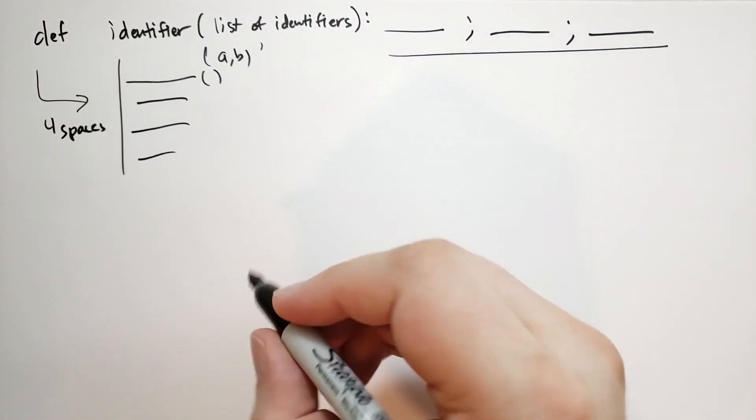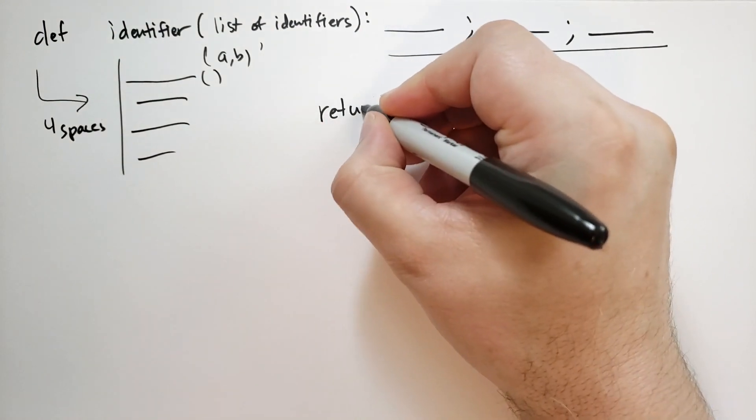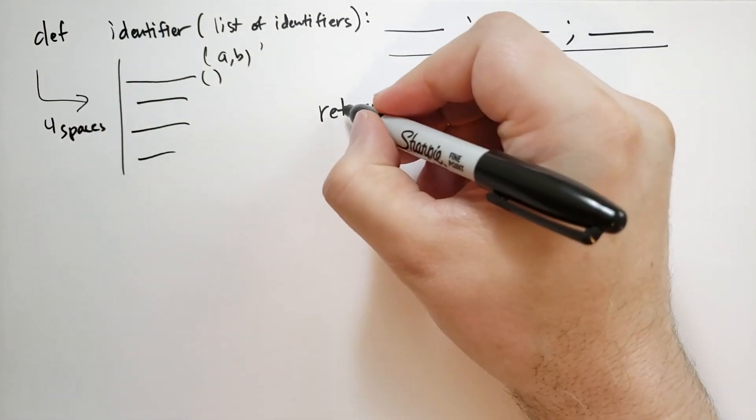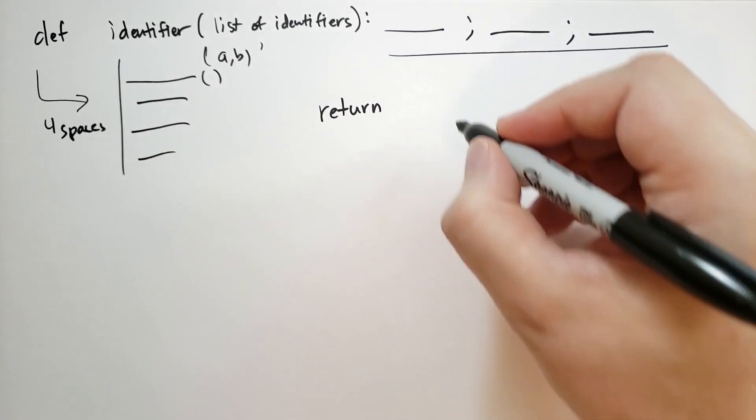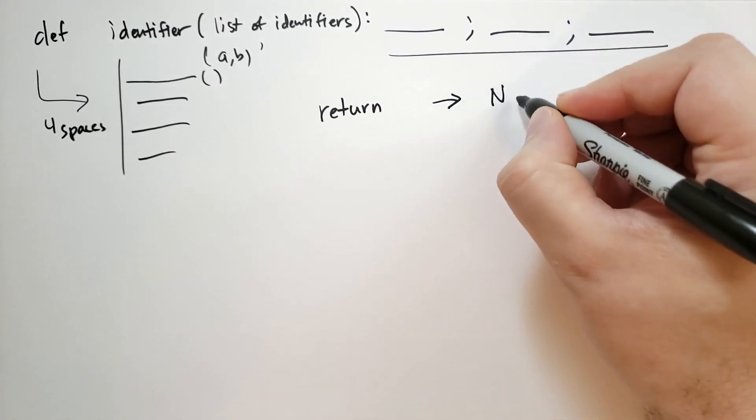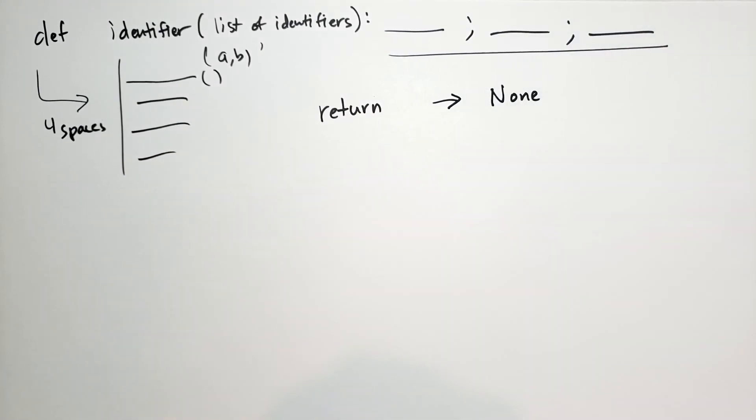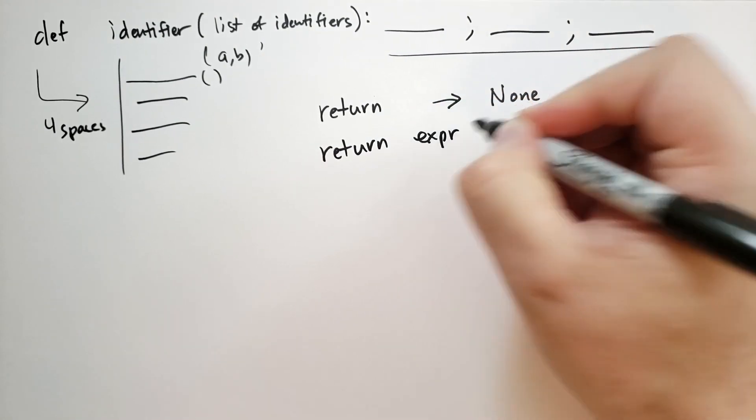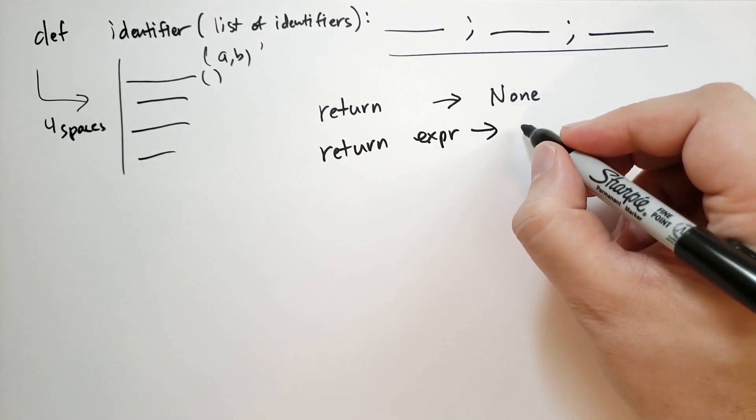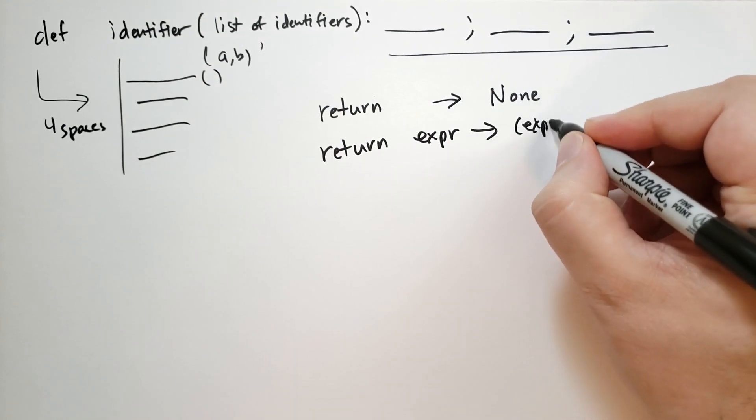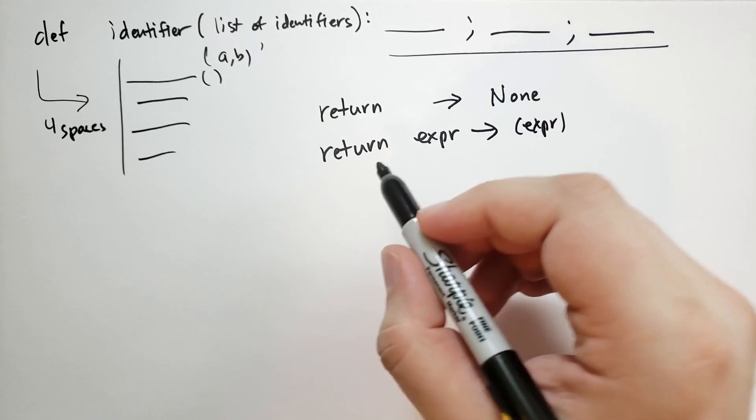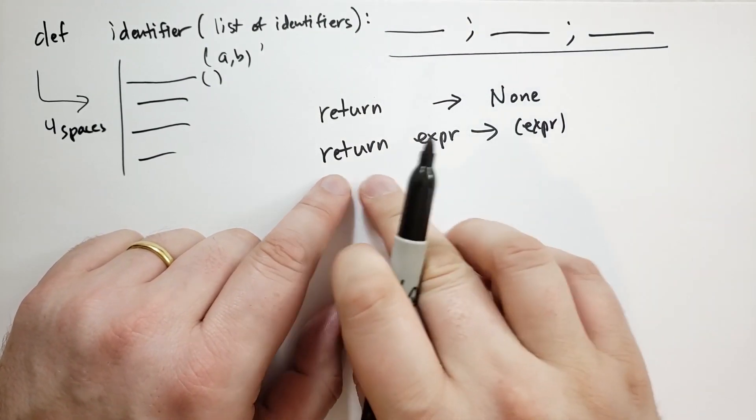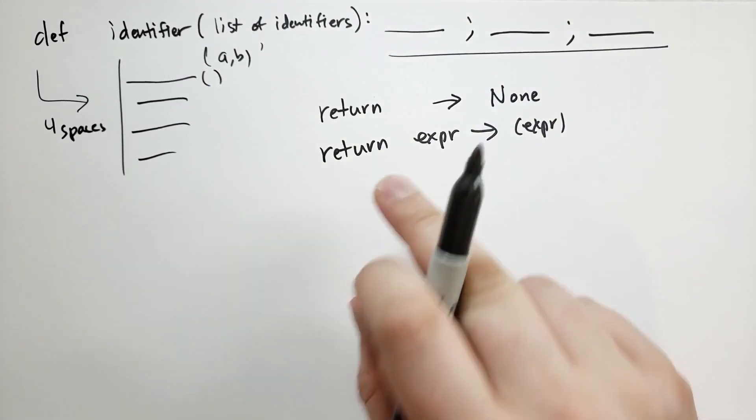And inside the function body, we can have a return statement. So the return statement can be as simple as just the word return by itself, in which case the return value will be none. Or you can have return with a single expression, and that will be whatever that expression evaluates to. You could also have multiple expressions. We'll cover that when we cover tuples and sequences.